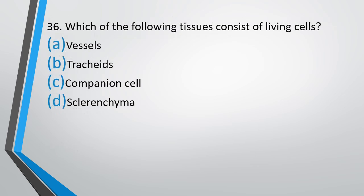Question No. 36: Which of the following tissue consists of living cells? Vessels, tracheids, companion cells, or sclerenchyma. The correct answer is option C, companion cells.